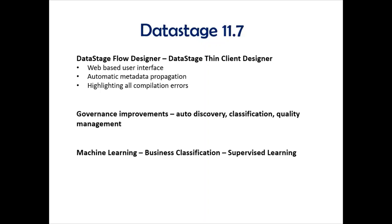The third feature is highlighting all compilation errors. Currently, when we compile a DataStage job with errors, it gives compilation errors one by one — we fix the first error, compile again, it fails on another error, and so on. Now it will list all the compilation errors at once, so we can fix them all together and then compile the job once we've finished. This is also pretty useful.